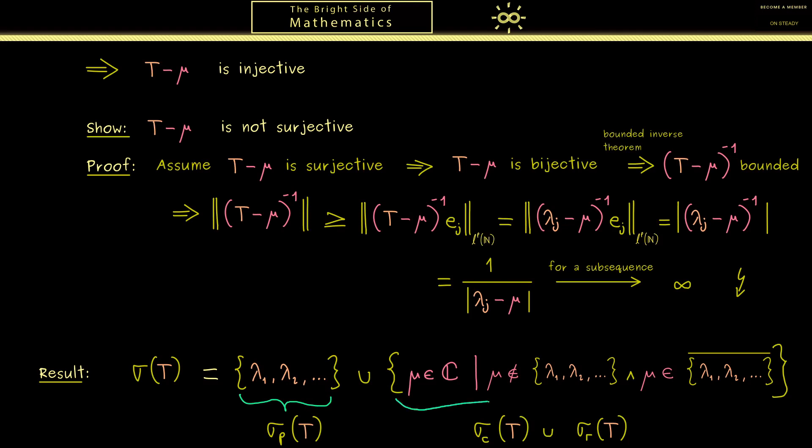And the second part is the continuous spectrum together with the residual spectrum. In fact later we will be able to show that for p less than infinity the residual spectrum is indeed empty. Therefore in our case this is actually the continuous spectrum. I think that's good enough for this example today.